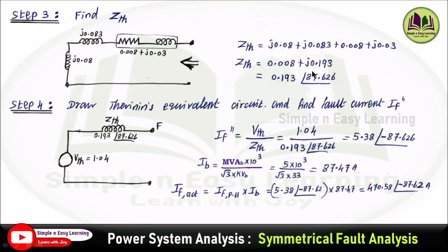Now draw the Thevenin equivalent circuit and find the fault current. The Thevenin equivalent circuit is a Thevenin voltage source behind the Thevenin impedance Z_Th = 0.193∠87.626°, with Thevenin voltage of 1.04 per unit. The fault current expression is I_F = V_Thevenin / (Z_Thevenin + Z_F). Since fault impedance is not specified, substitute Z_F = 0. So I_F = 1.04 / 0.193∠87.626°.